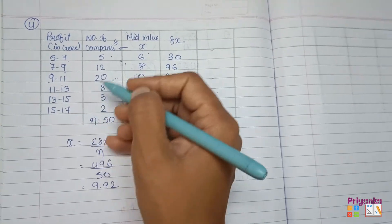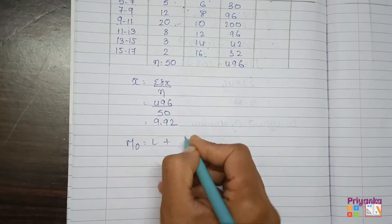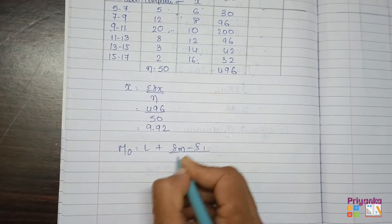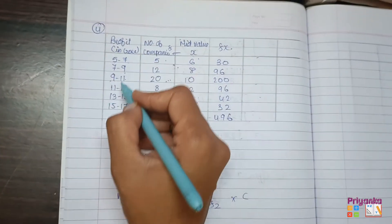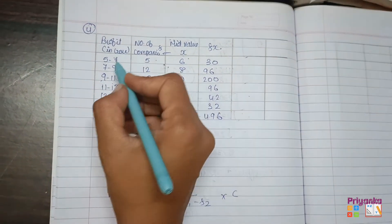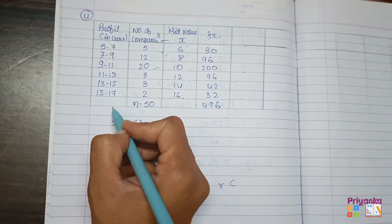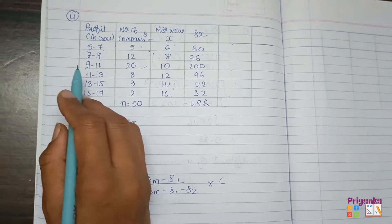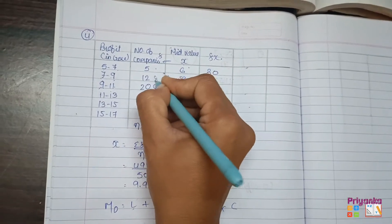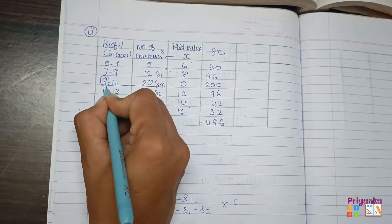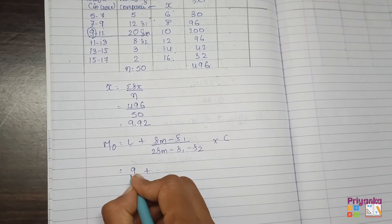There's only one highest frequency in this column, so we'll find the mode using the formula: L plus (fm minus f1) divided by (2fm minus f1 minus f2) into c. This is exclusive class, meaning 5 to 7, 7 to 9, 9 repeats - exclusive class. Here the highest frequency is fm, this is f1, this is f2. When it's exclusive, you take the lower limit directly, no minus 0.5 calculation.